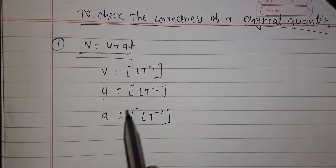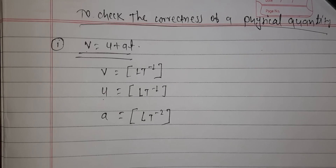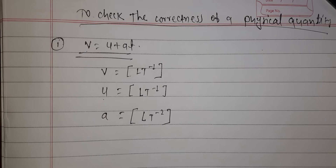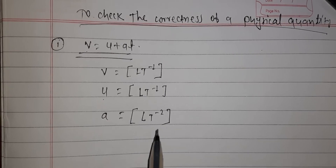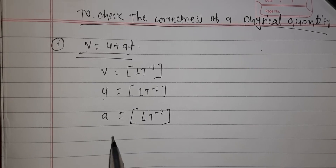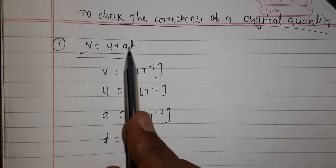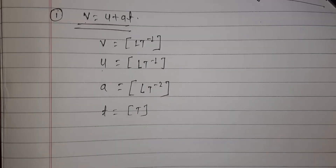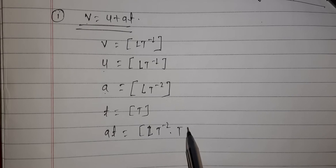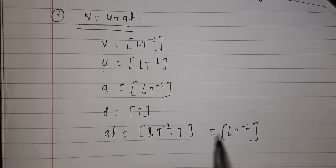If you have problems writing the dimensional formula of velocity or acceleration, you can see my first video about dimensional analysis which I have made to clear your doubts. Now, time t has the dimensional formula T. When acceleration a and time t are combined, it becomes LT⁻² multiplied by T, which gives LT⁻¹.